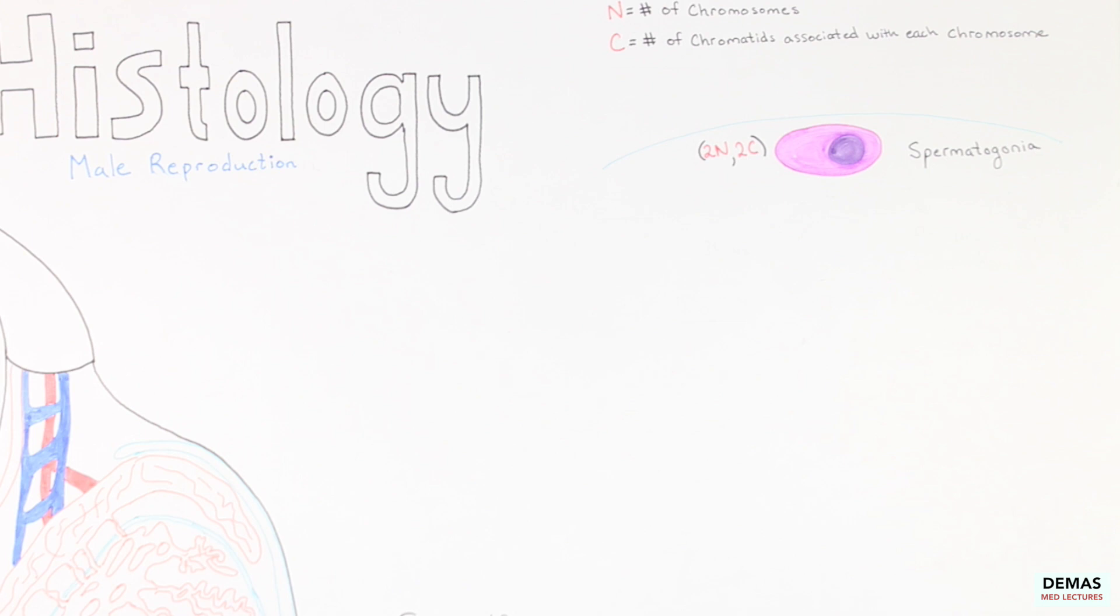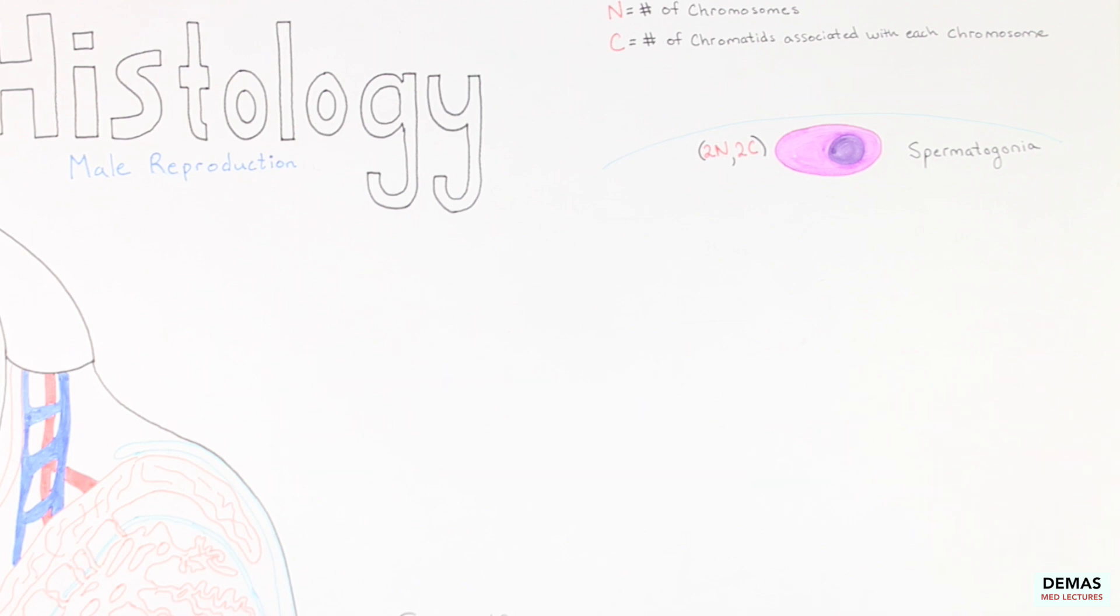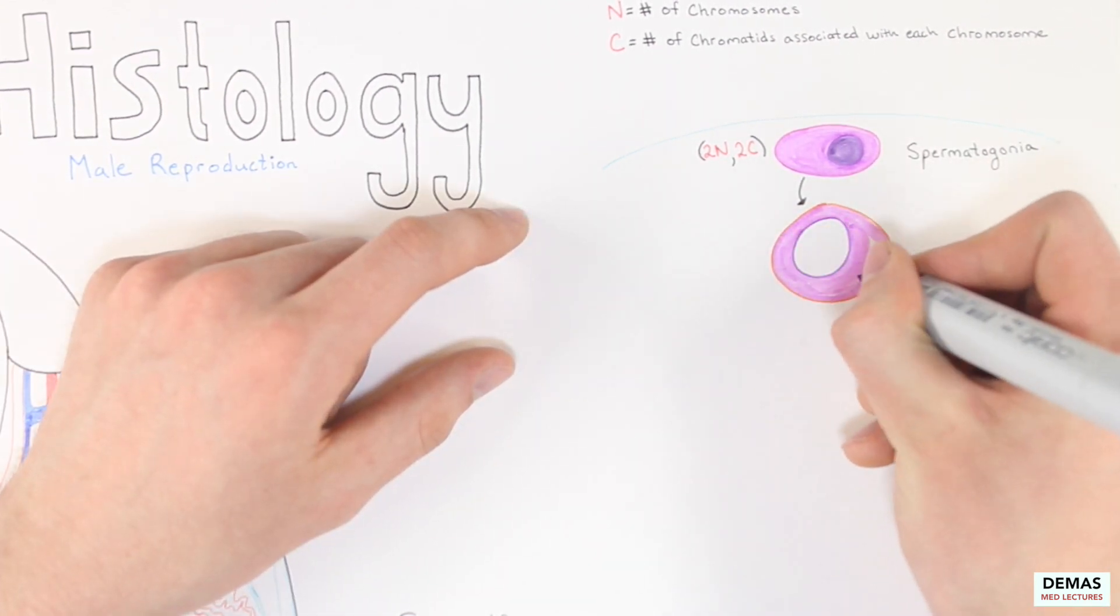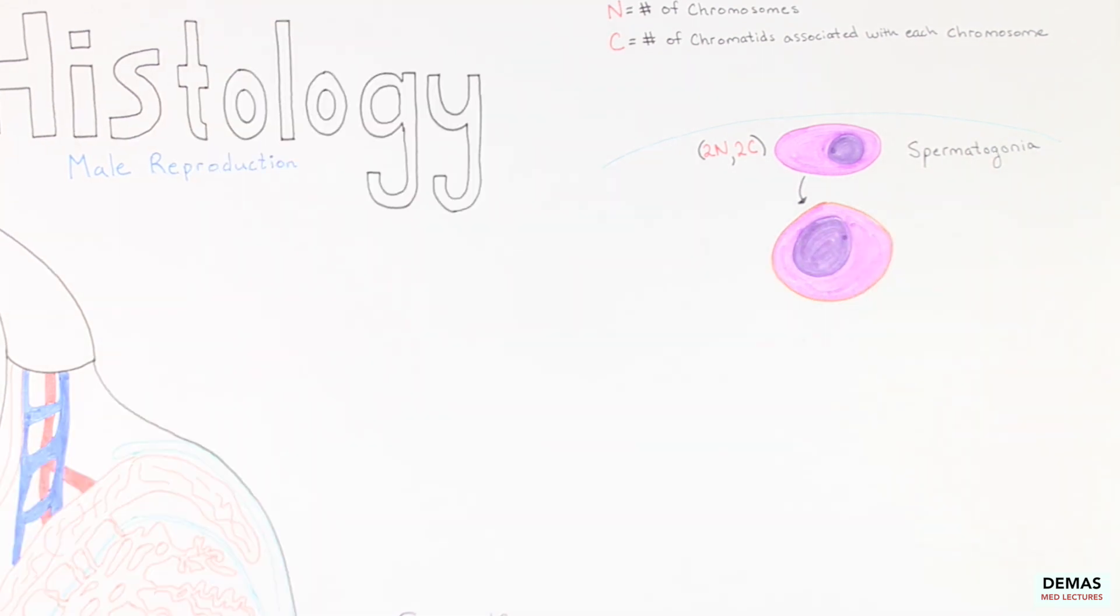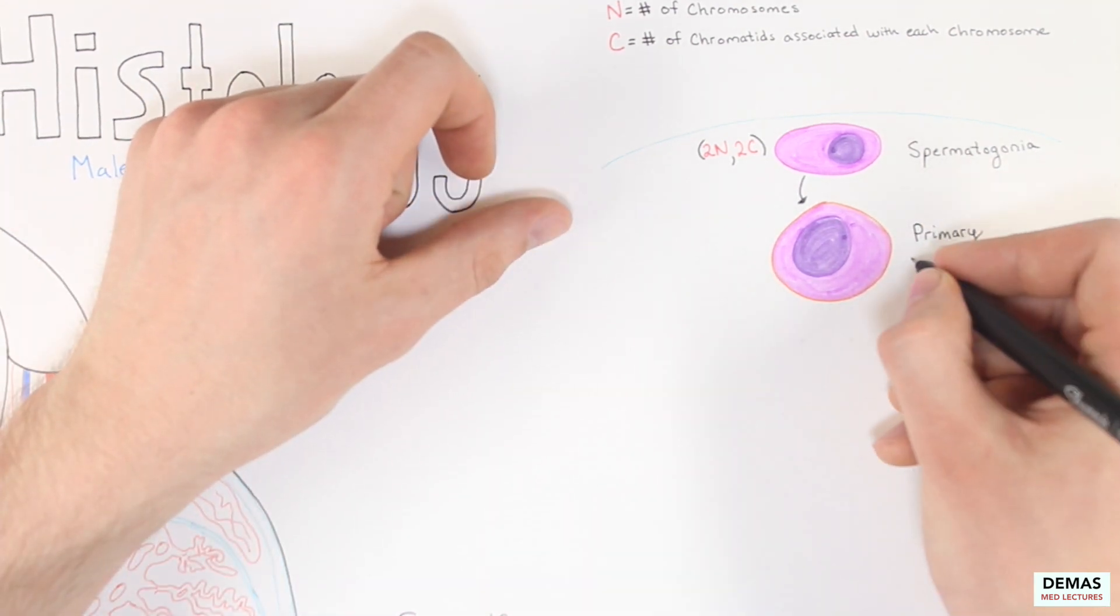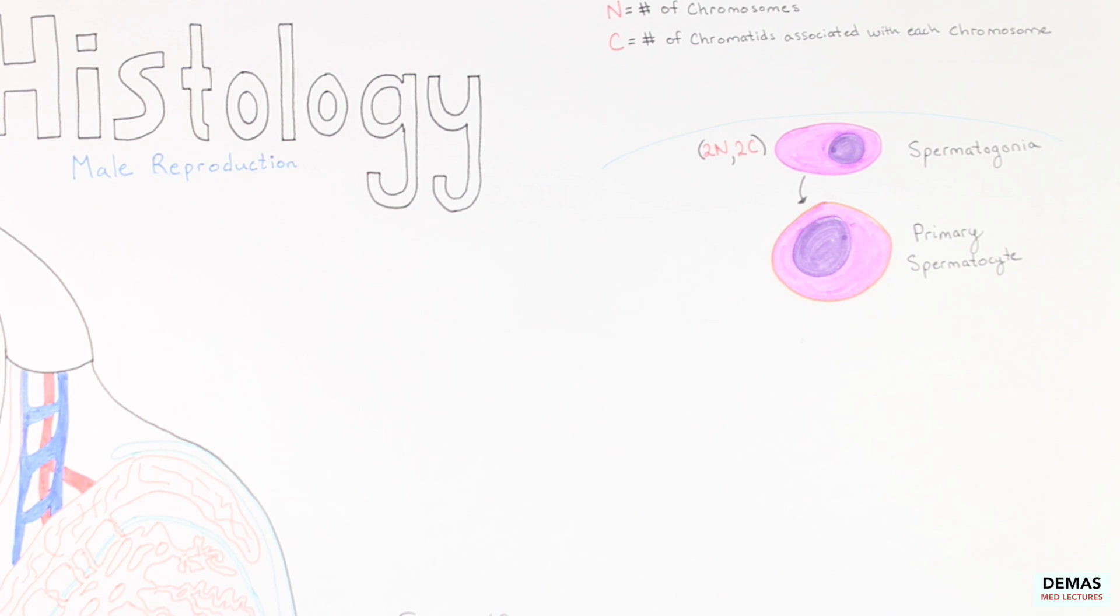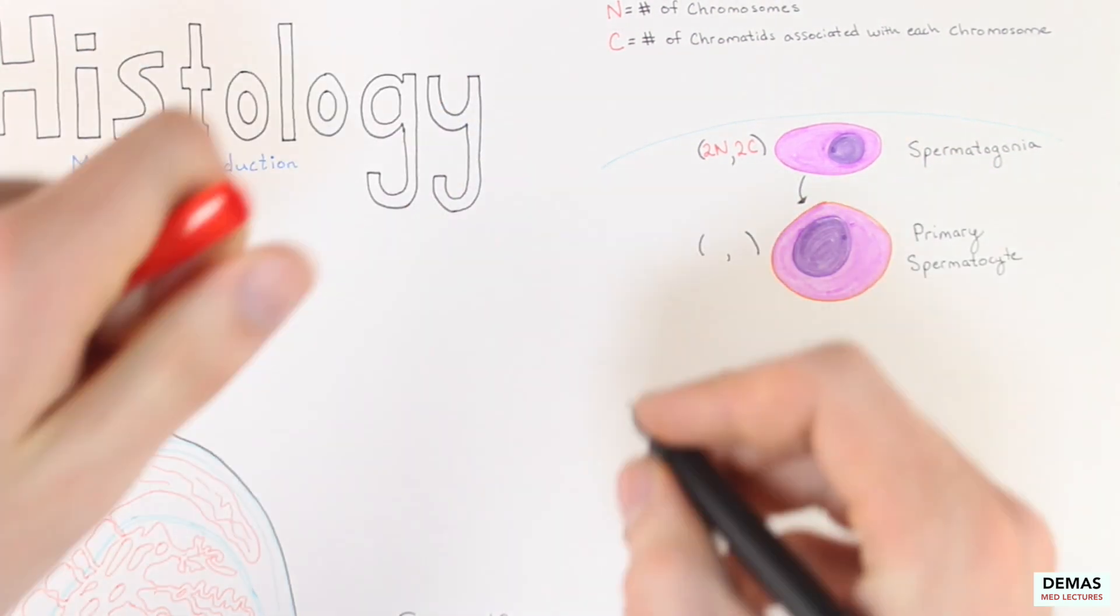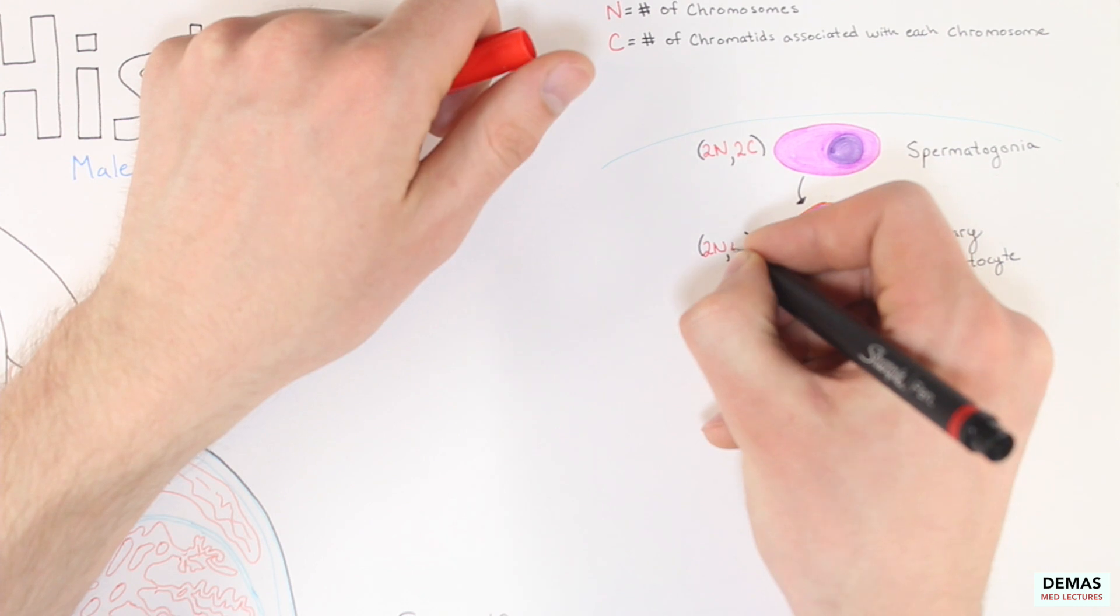Let's follow a spermatogonia as it undergoes the series of steps involved in meiosis. The spermatogonia replicates this genetic information and moves towards the interior of the lumen of the seminiferous tubules, forming a primary spermatocyte. Since the chromatids replicate forming identical sister chromatids during this process, the genetic information of the primary spermatocyte is considered 2N4C.